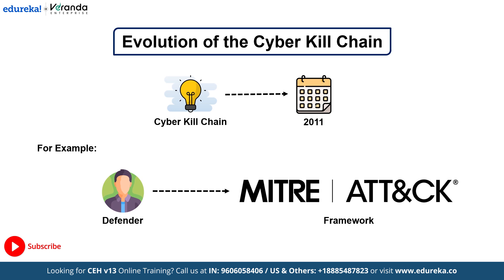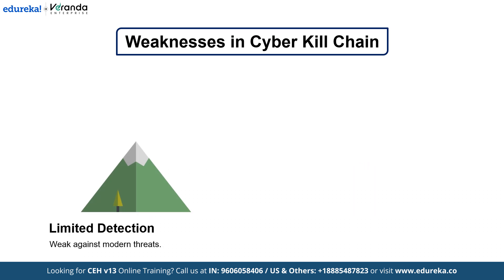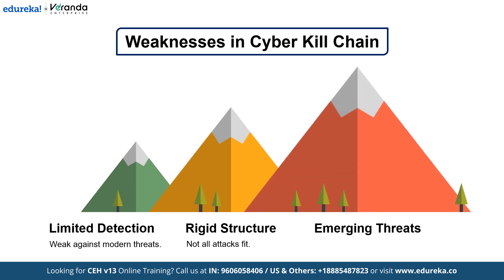Even with its strengths, the cyber kill chain isn't perfect and has some limitations. First, limited detection: it focuses heavily on malware but struggles with newer threats like file-less attacks and insider threats. Next, rigid structure: not all attacks follow the linear 7-stage process. Additionally, emerging threats such as deepfake phishing and AI-driven attacks require more flexible defenses. To overcome these weaknesses, organizations should complement the cyber kill chain with other frameworks and advanced technologies.